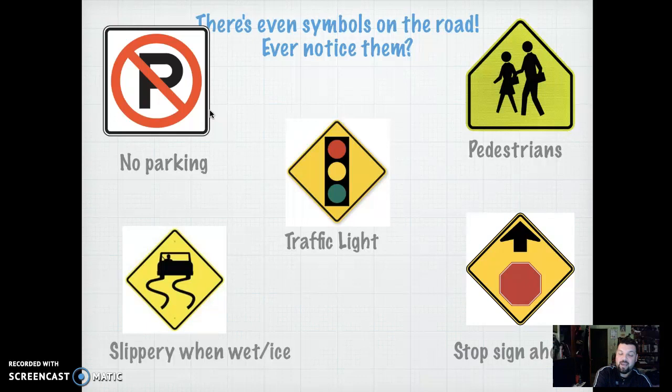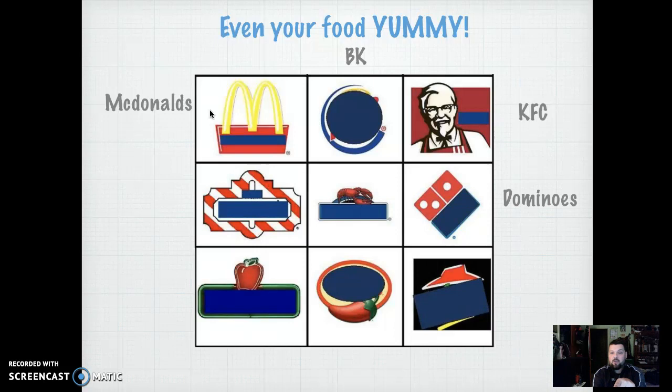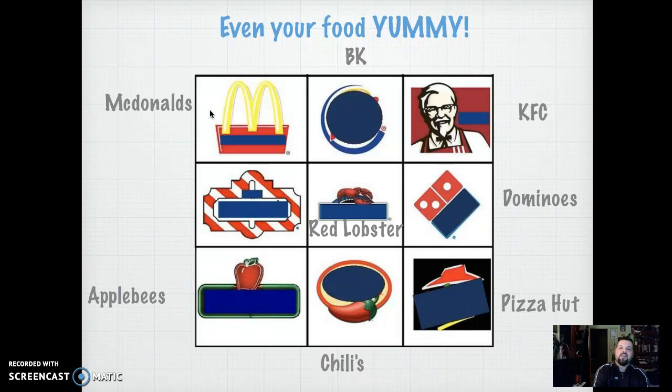What about your food? The ones you eat? There's symbols there too. You got McDonald's. Burger King — did you recognize that one? BK? How about this old man right here with the goatee? That's KFC. Domino's Pizza. And then their competitor right under there — Pizza Hut. We got Chili's. What about that one with the lobster? That's Red Lobster. Applebee's. And that one's TGI Fridays, which we don't have in the valley anymore.